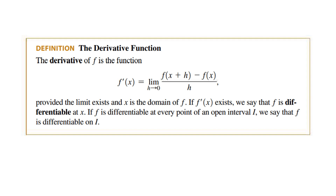Now let's make things general. Instead of saying the slope of a tangent is equal to, we will say the derivative of the function f, written f prime of x, is equal to the limit as h goes to 0 of f of x plus h minus f of x divided by h. Basically, f of x plus h and f of x are two very close points. Instead of doing rise over run, we will use this formula.